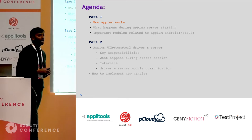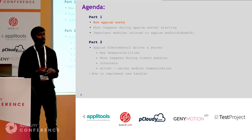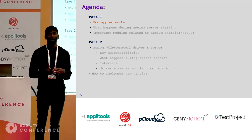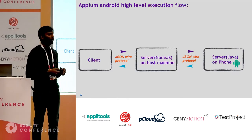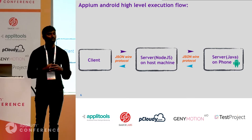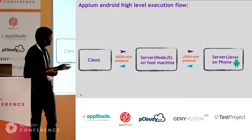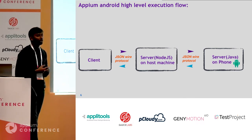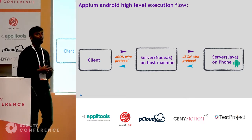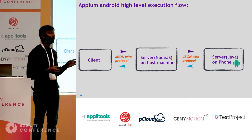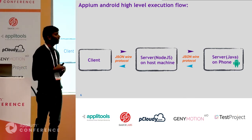If you pay the right attention, by the end of the presentation you should get a hint on how to implement a new handler and extend the entire Appium codebase. On a very high level, Appium has three layers. This diagram is from the context of Appium on Android. We have three layers: the client module, the Appium server running on your host machine, and another server running on your phone.